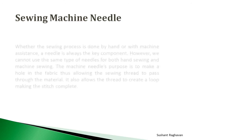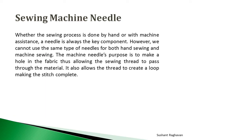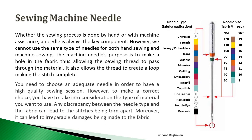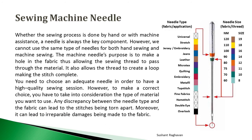Whether the sewing process is done by hand or with machine assistance, a needle is always the key component. However, we cannot use the same type of needles for both hand sewing and machine sewing. The machine needle's purpose is to make a hole in the fabric, thus allowing the sewing thread to pass through the material. It also allows the thread to create a loop, making the stitch complete.